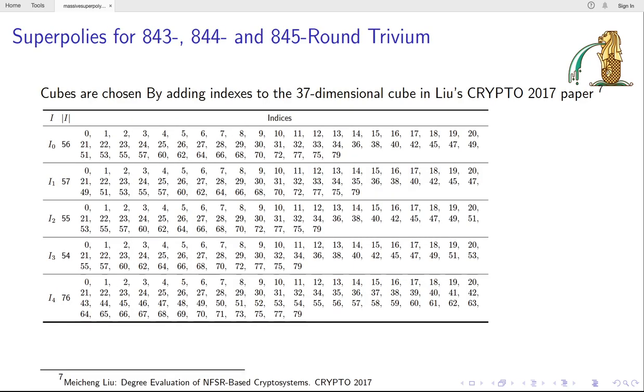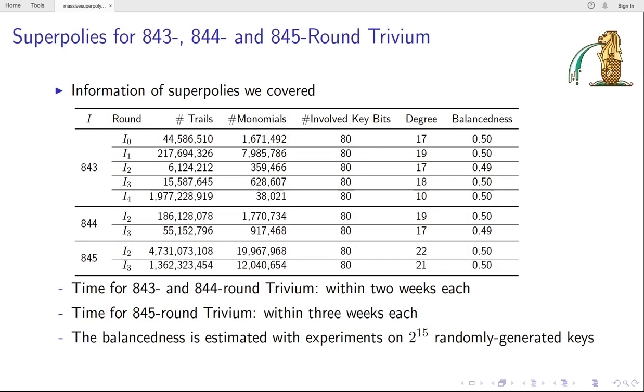Next, I will show some results of this new framework. The first application is for Trivium. You can see here five cubes we used in our experiments. These cubes are chosen by adding new indexes one by one to the cube given by Liu in Crypto 2017. And here is the information of the Super-Poly we recovered. These Super-Polys are truly massive and contain hundreds and thousands monomials. All of them involve all key bits.